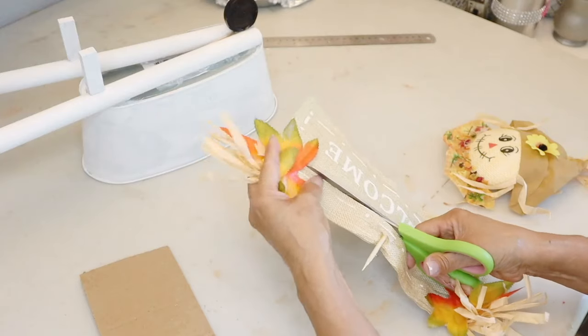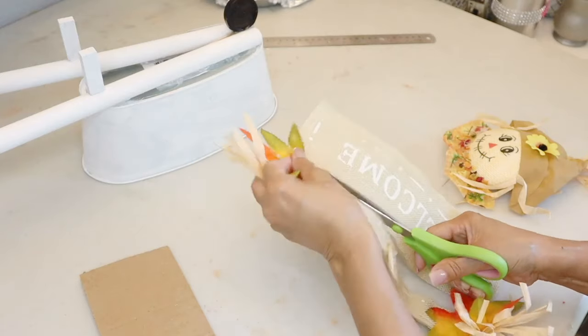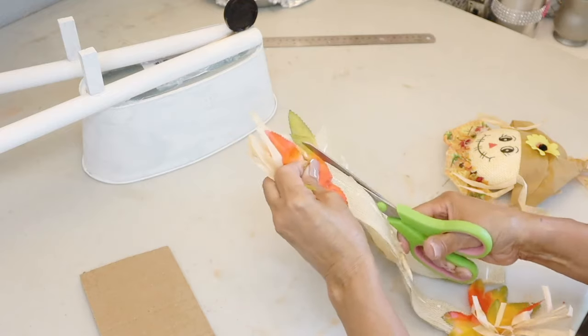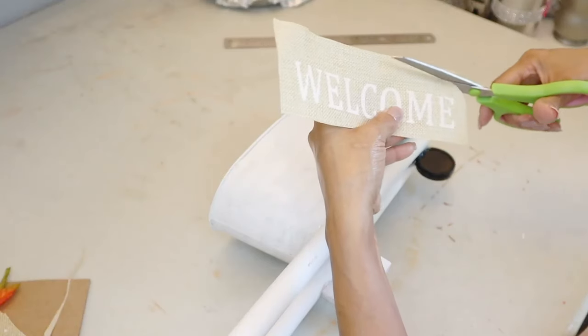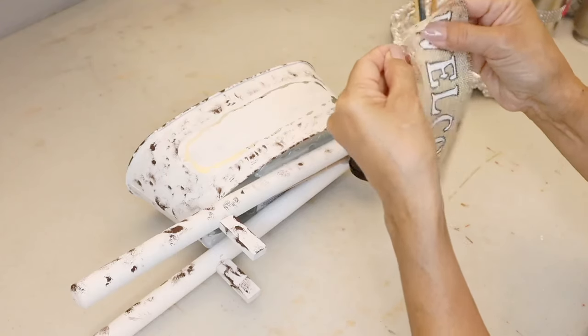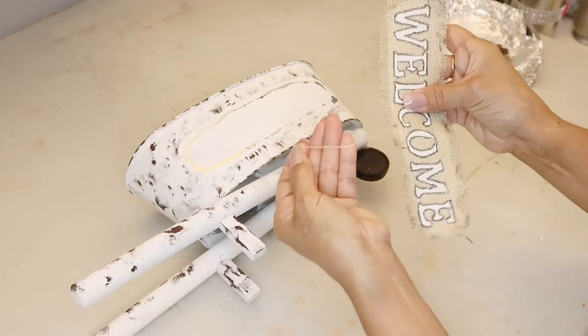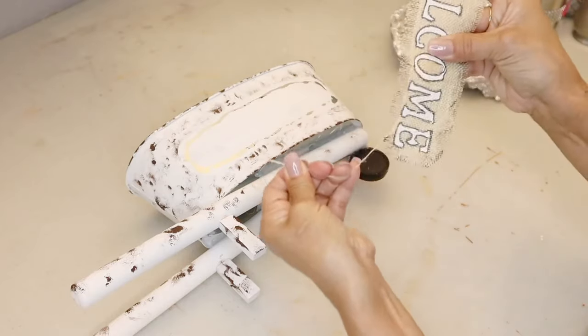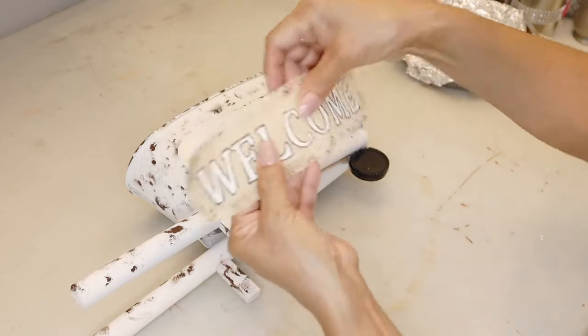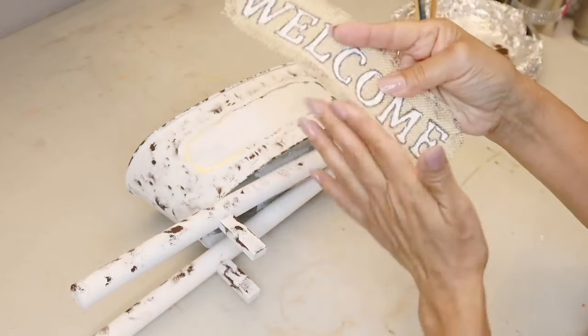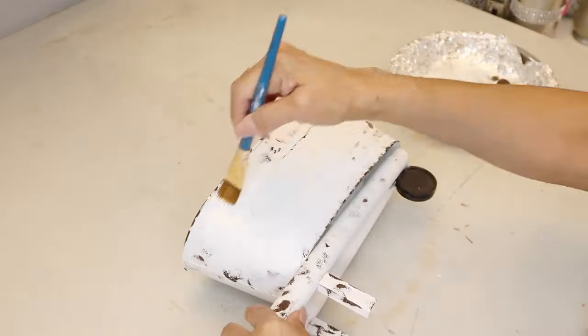Okay, so the next thing that I did is cut out the word 'welcome' from this welcome sign, and then I trimmed it up just so that it would fit my wheelbarrow. I ended up removing some of the thread on the edges because I wanted it to look raw on the edges, and I also outlined the word 'welcome' with a Sharpie.